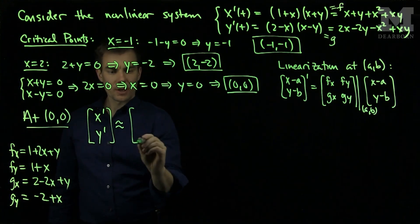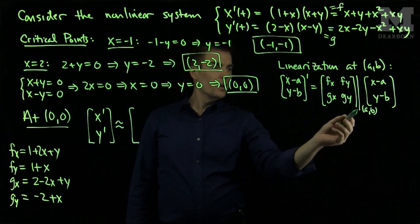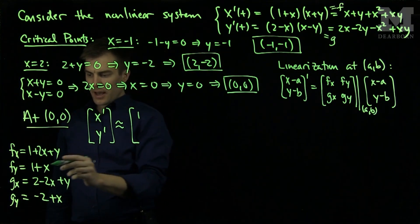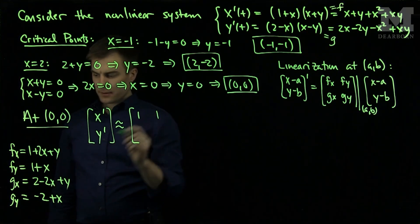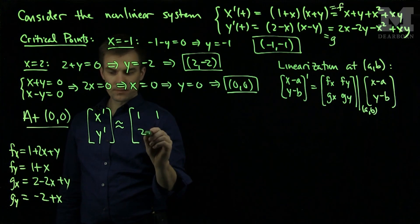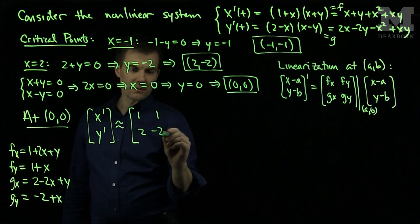Now, we do our approximation. So when I plug in the critical point zero, zero to FX, I will get 1, and then I will get a 1 for FY. For GX of zero, zero, I will get a 2, and for GY of zero, zero, I will get a negative 2.